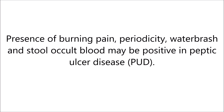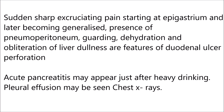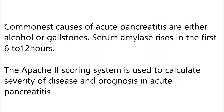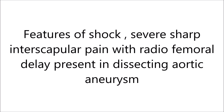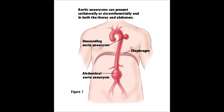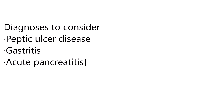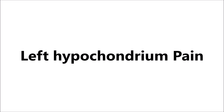Upper gastrointestinal endoscopy should be done. Presence of burning pain, periodicity, water brash, and occult blood may be positive in peptic ulcer disease. Sudden excruciating pain starting at the epigastrium and later becoming generalized, with pneumoperitoneum, guarding, dehydration, and obliteration of liver dullness, are features of perforated duodenal ulcer. Acute pancreatitis may appear just after heavy drinking; pleural effusions may be seen on chest X-ray. The most common causes of acute pancreatitis are either alcohol or gallstones. Serum amylase rises in the first six to twelve hours. The Glasgow scoring system is used to calculate severity and prognosis in acute pancreatitis. Features of shock, severe intrascapular pain, and radio-femoral delay suggest dissecting aortic aneurysm. Diagnoses to consider: peptic ulcer disease, gastritis, acute pancreatitis.